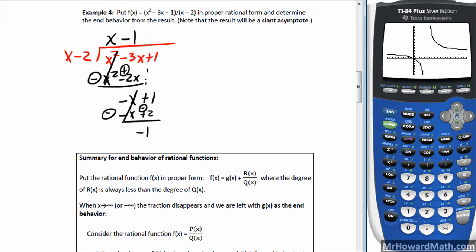So the remainder, put that in another color, would be minus 1 over x minus 2. So when we do that, the end behavior asymptote, in this case it's going to be a slant asymptote, is everything in front of the remainder. So I have a slant asymptote in this case, we'll abbreviate with SA, is equal to x minus 1.